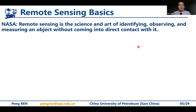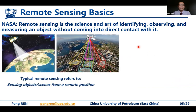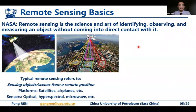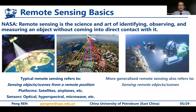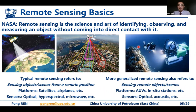NASA defines remote sensing as the science and art of identifying, observing, and measuring an object without coming into direct contact with it. Typical remote sensing refers to sensing objects from a remote position. Platforms can be satellites or airplanes, and sensors can be optical, hyperspectral, and microwave. More recently, generalized remote sensing also refers to sensing remote objects where platforms can be AUVs and in-situ stations, and sensors can be optical and acoustic.